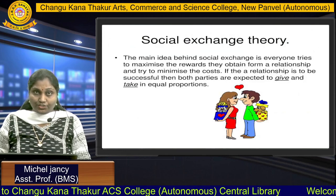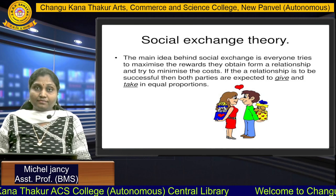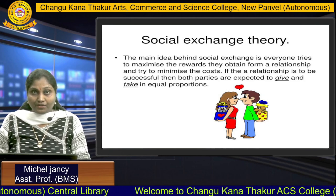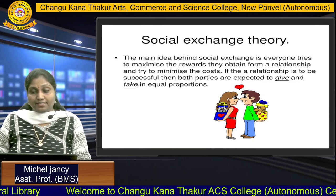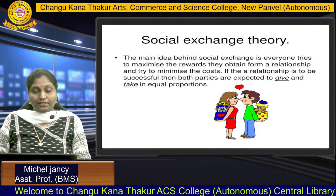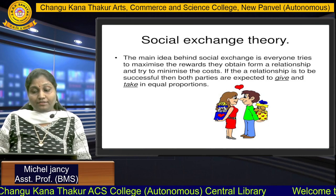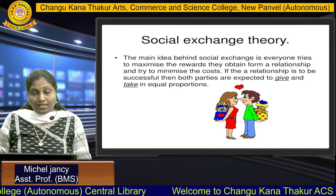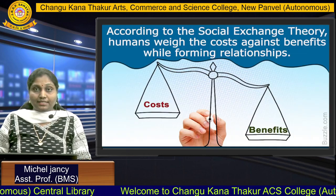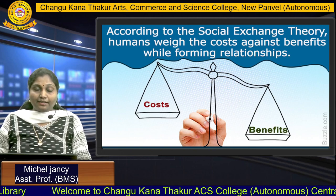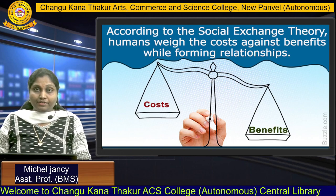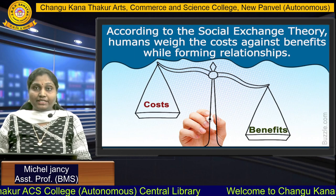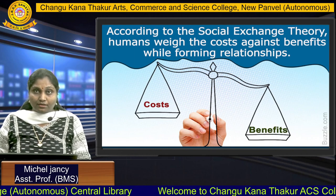The next one is the Social Exchange Theory. According to this theory, human beings give something to receive something more desirable in return. The main idea is that everyone tries to maximize the rewards they obtain from a relationship and minimize the cost. If the relationship is to be successful, both parties are expected to give and take in equal proportion. If risks outweigh the profits, people tend to abandon the relationship — and the same applies in business.